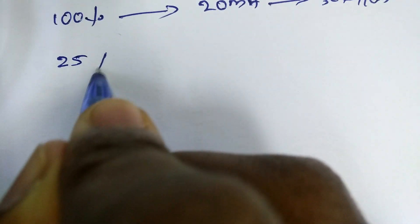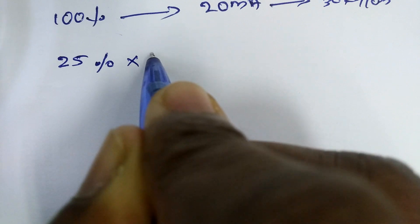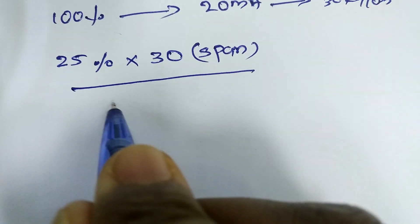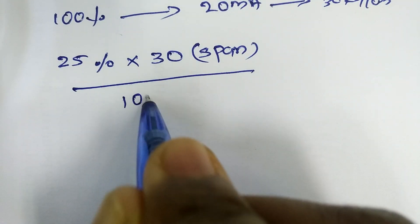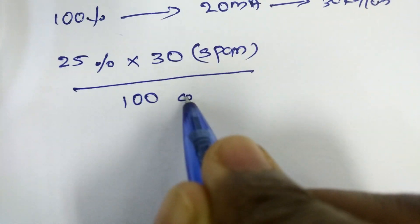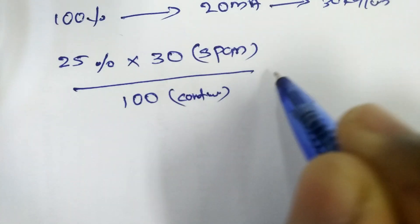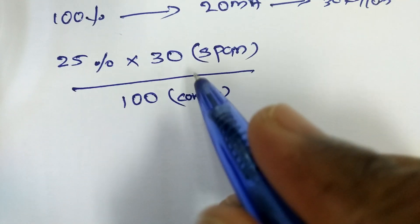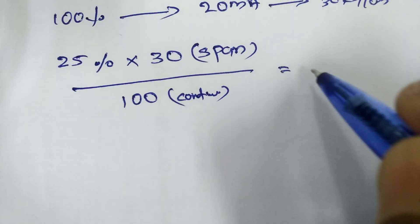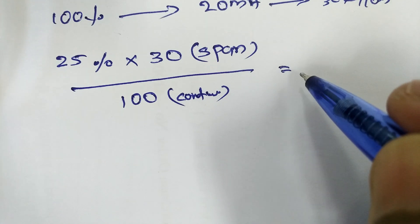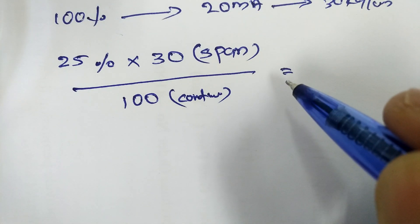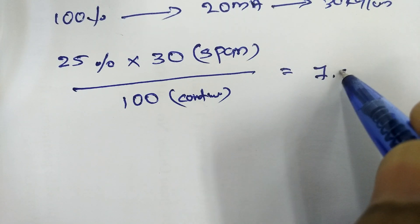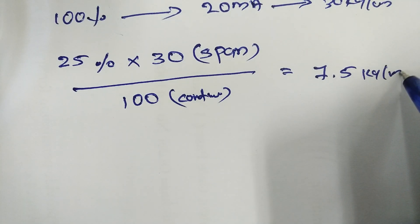Let's calculate 25% of 30 kg per cm². The span is 30. We calculate: 25% multiplied by 30, divided by 100. The result is 7.5 kg per cm².